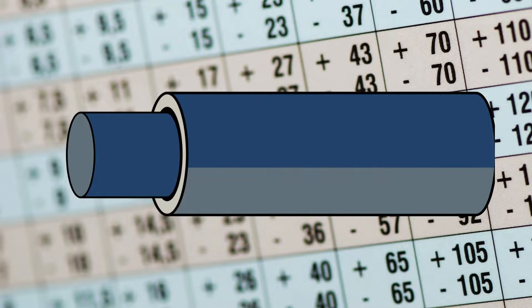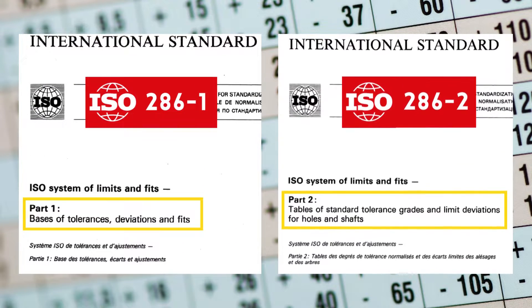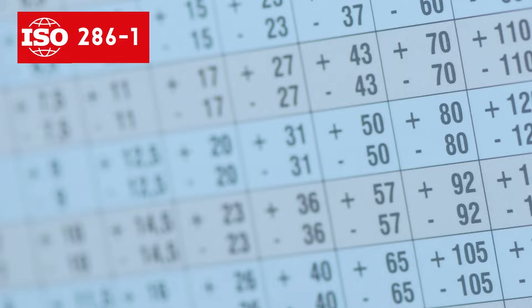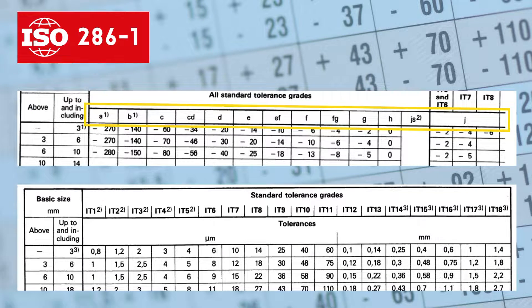The most commonly used tolerancing system for shafts and holes is detailed in the ISO 286-1 and -2 standards. ISO 286-1 charts the fundamental deviations, such as G, J, and K, and tolerance grades, such as 7, 8, and 9, in separate tables.